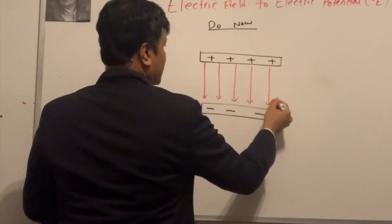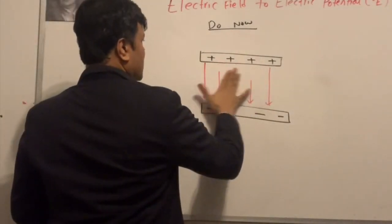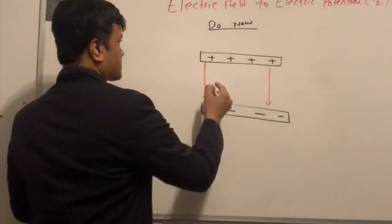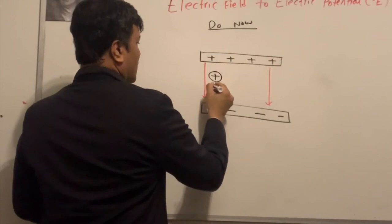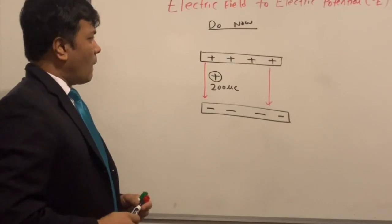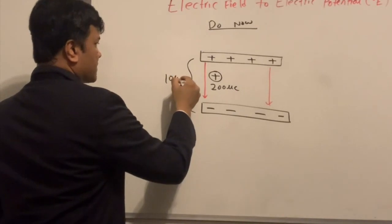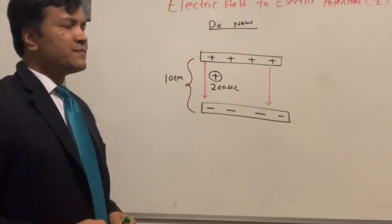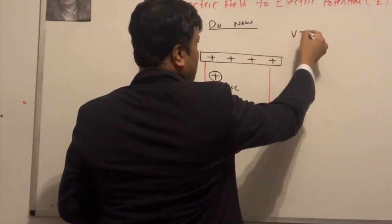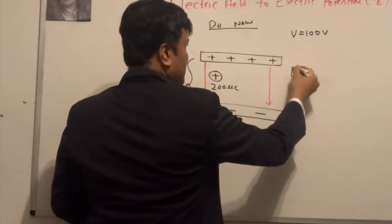These are the field lines. I'm going to put a positive charge inside here. The charge is 200 microcoulombs. The distance between the two plates is 10 centimeters, and the voltage is 100 volts.